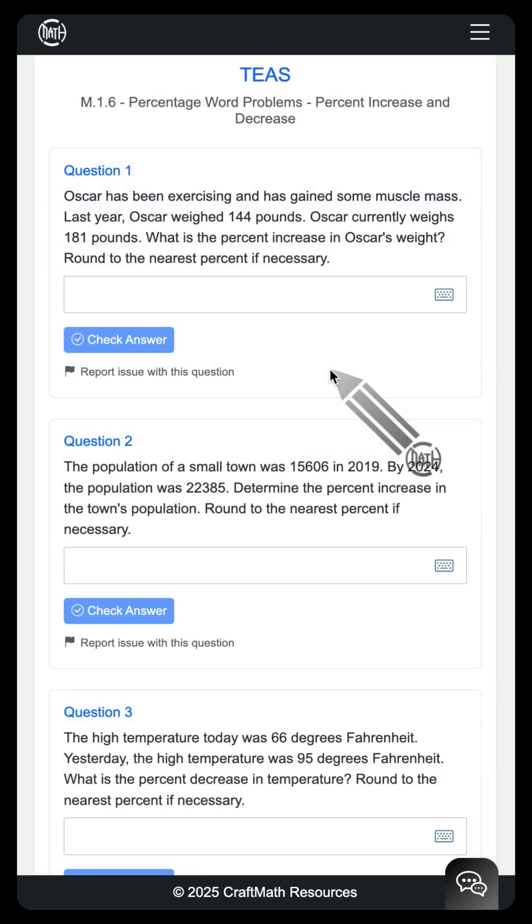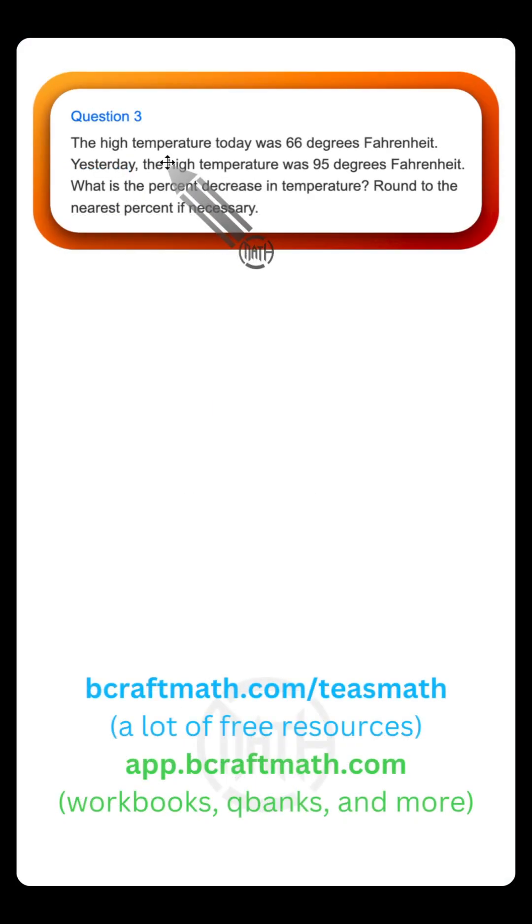Generate those questions. And every time you do this, you get 10 fresh questions. The one that I want to cover here is number three. Now, in this example, we have a high temperature for today and for yesterday, and we want to find the percent decrease.